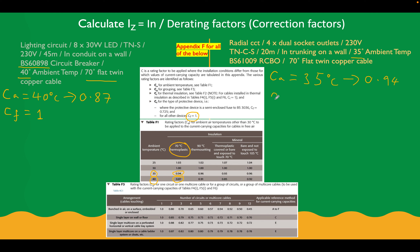For CF: we're not using a BS3036 fuse here — we're using a 61009 — so CF is going to equal 1. We're not including the grouping factor CG in this example, but it's worth being aware of. The ambient temperature table is table F1, and the grouping factor table is table F3 — just flip to those pages in the on-site guide.